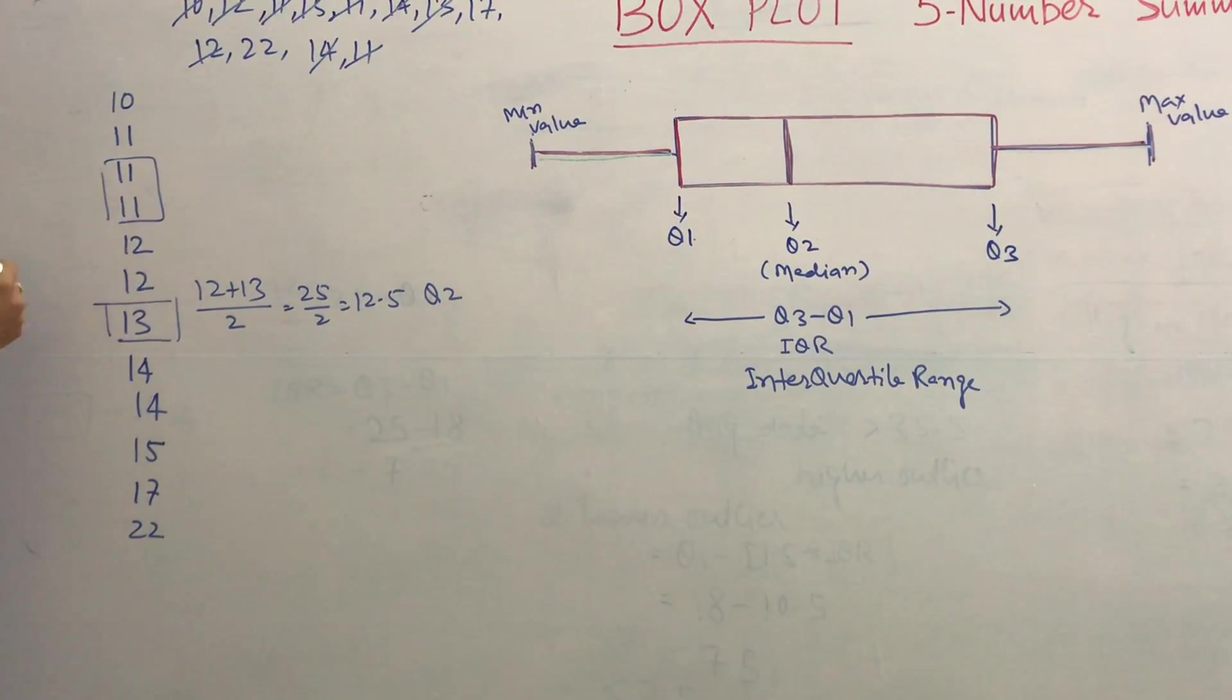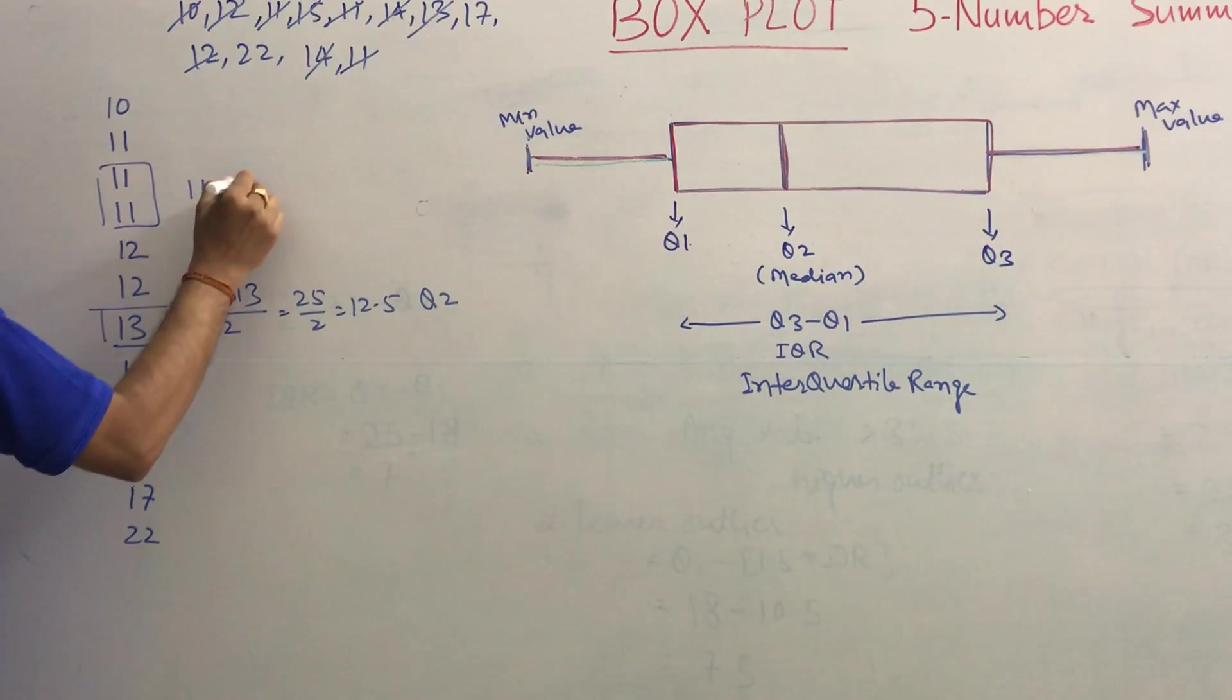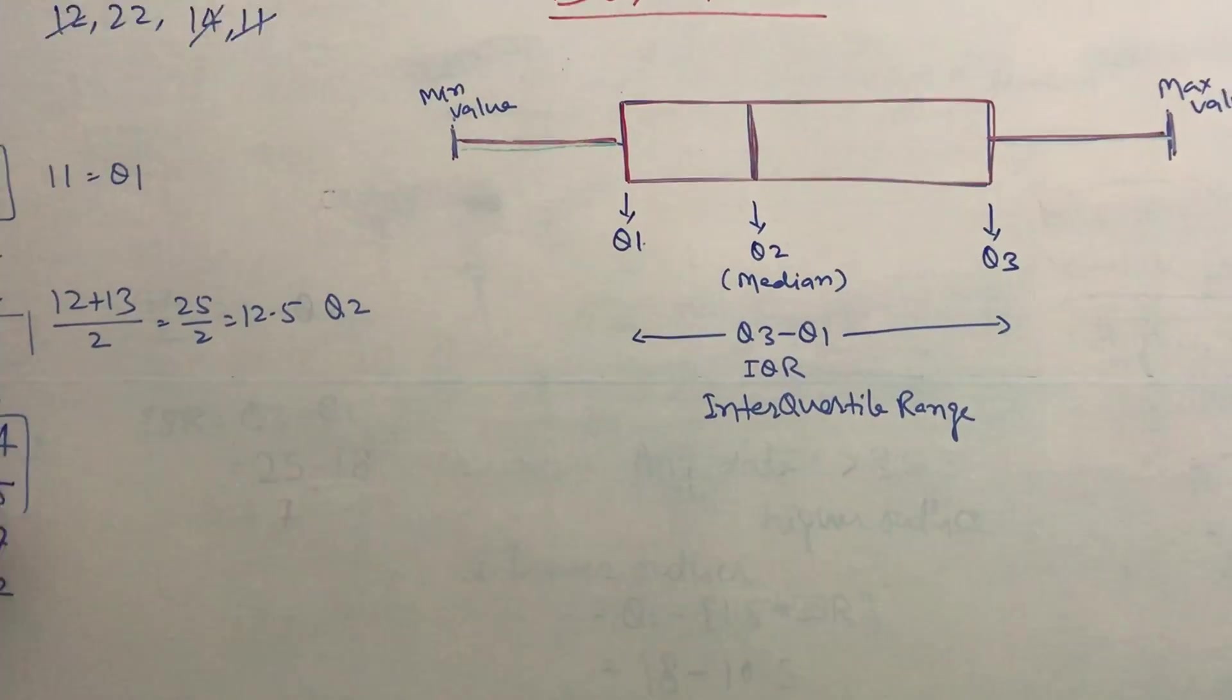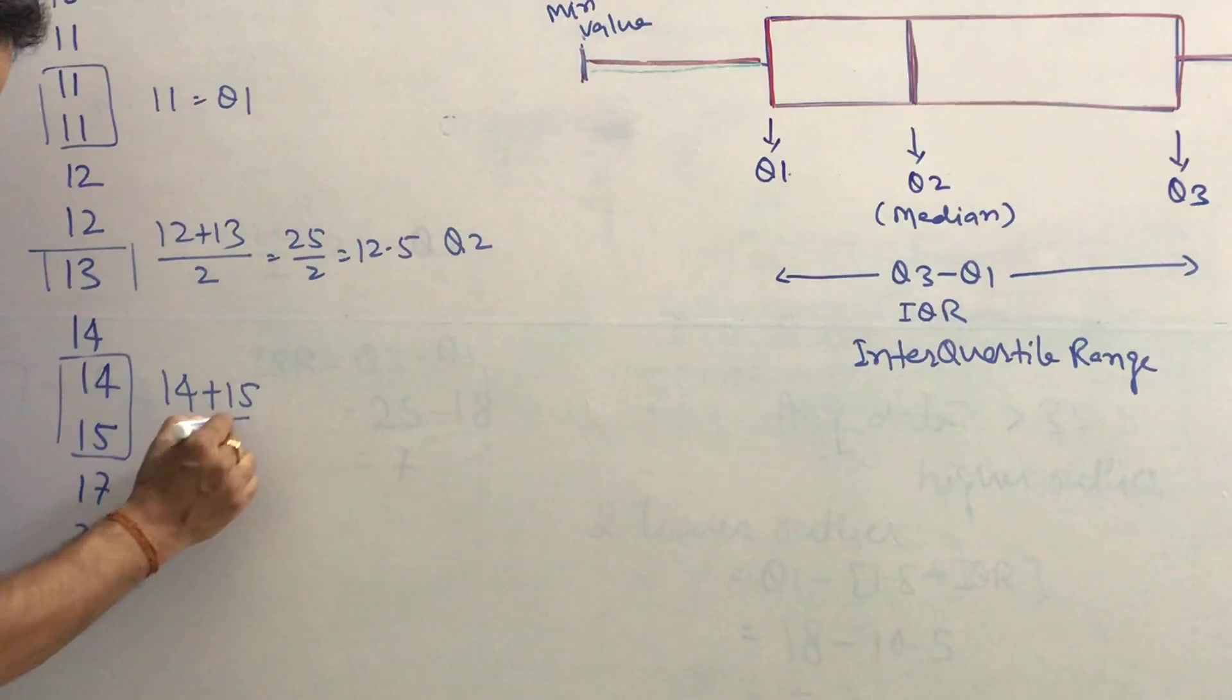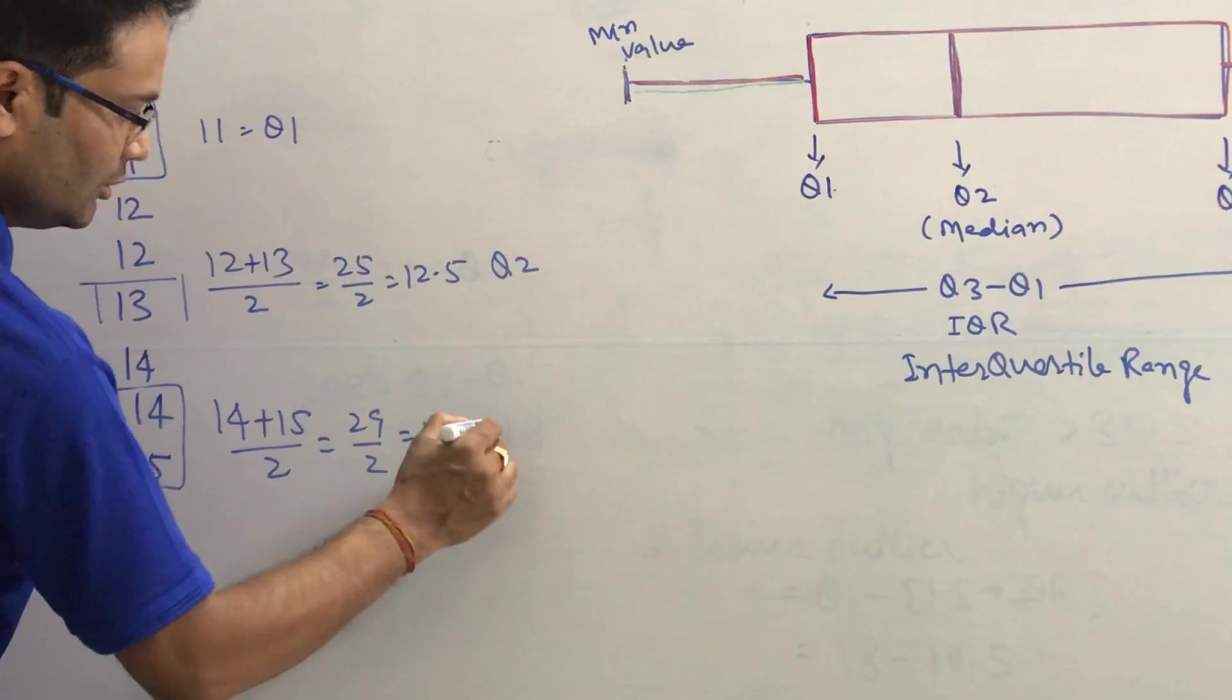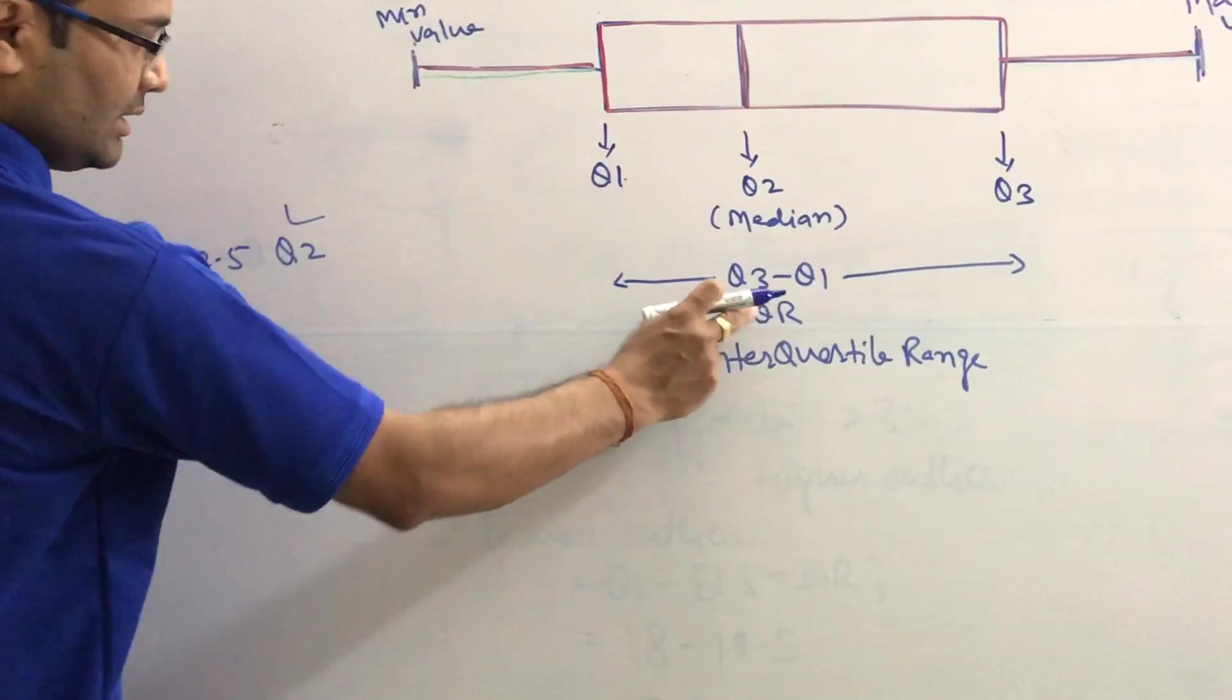How to get Q1? There are 6 data points, so the median data—both are the same—so the average is 11, which is Q1. Now for Q3, there are 6 data points here, so the median is 14 plus 15 divided by 2, which is 29 by 2, equal to 14.5. So this is Q3. We also need to find the IQR. How to get the IQR? Q3 minus Q1. So Q3 is 14.5 minus 11, so 3.5 is the IQR.